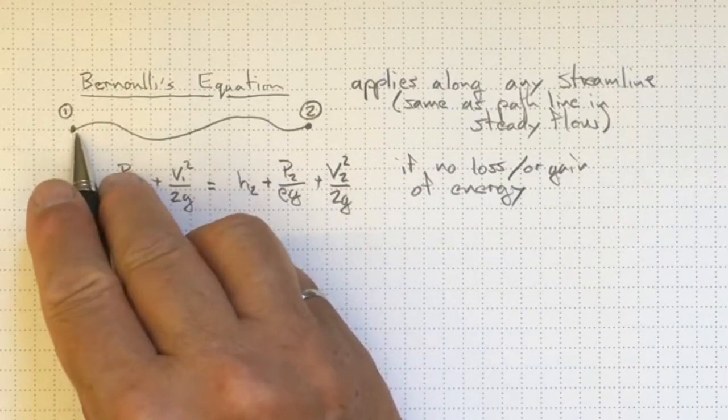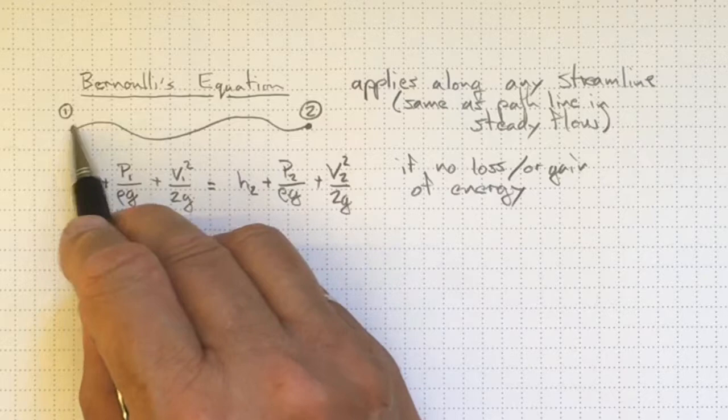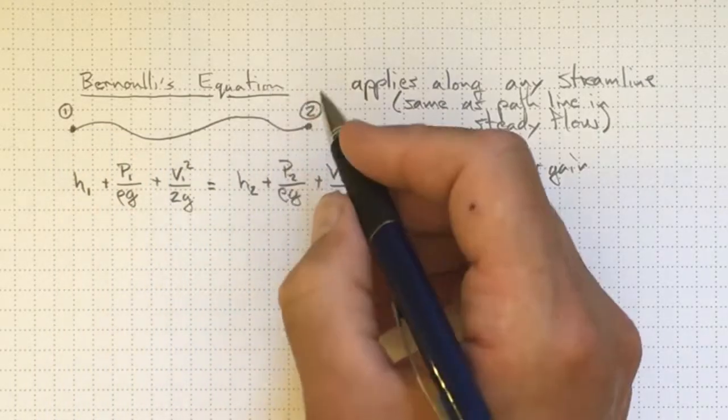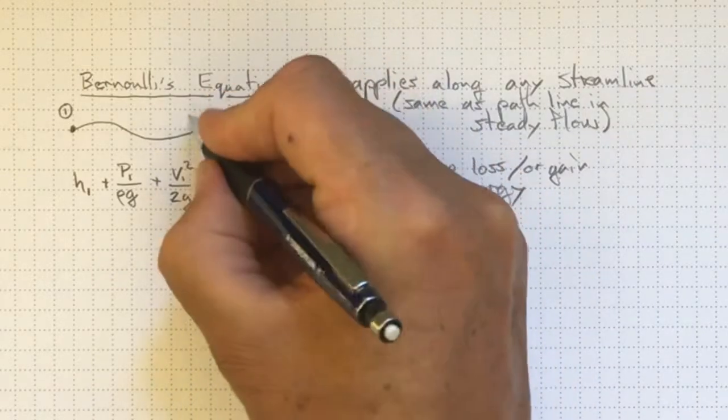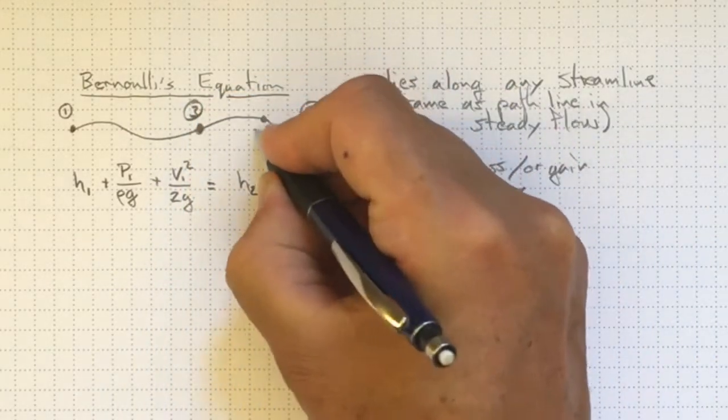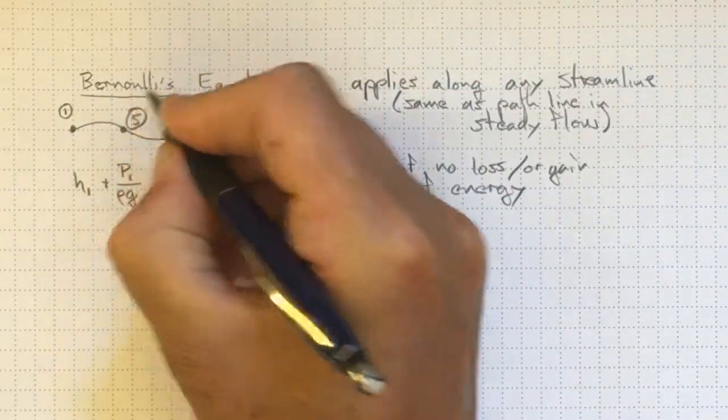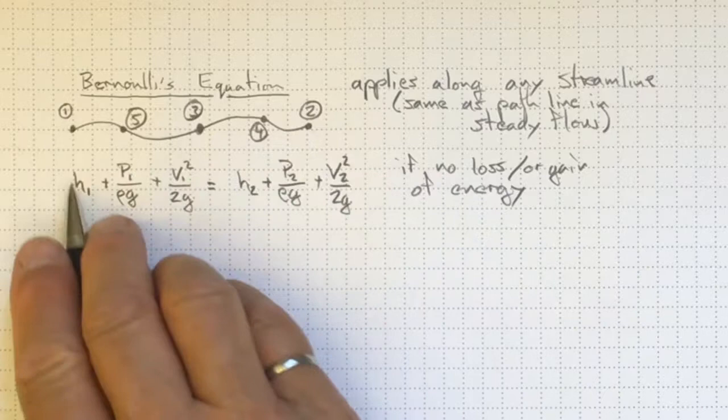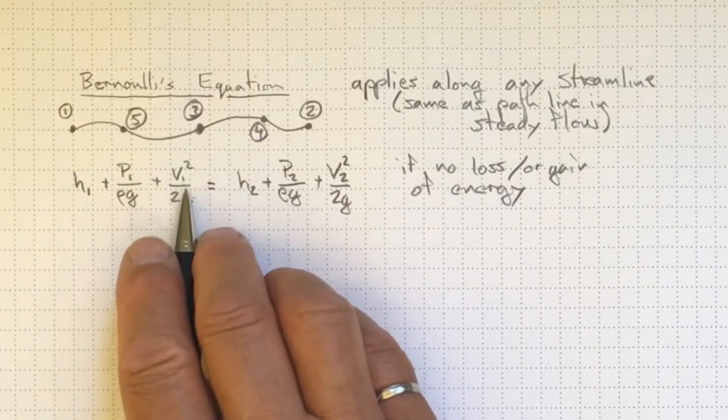We can apply Bernoulli's equation along any streamline between two points, say from point 1 to point 2. We could just as easily apply it between any three points, some point at location 3, or at location 4, or at location 5. Any point, as long as it's on a streamline, this quantity h + p/ρg + v²/2g will add up to a constant representing conservation of energy.